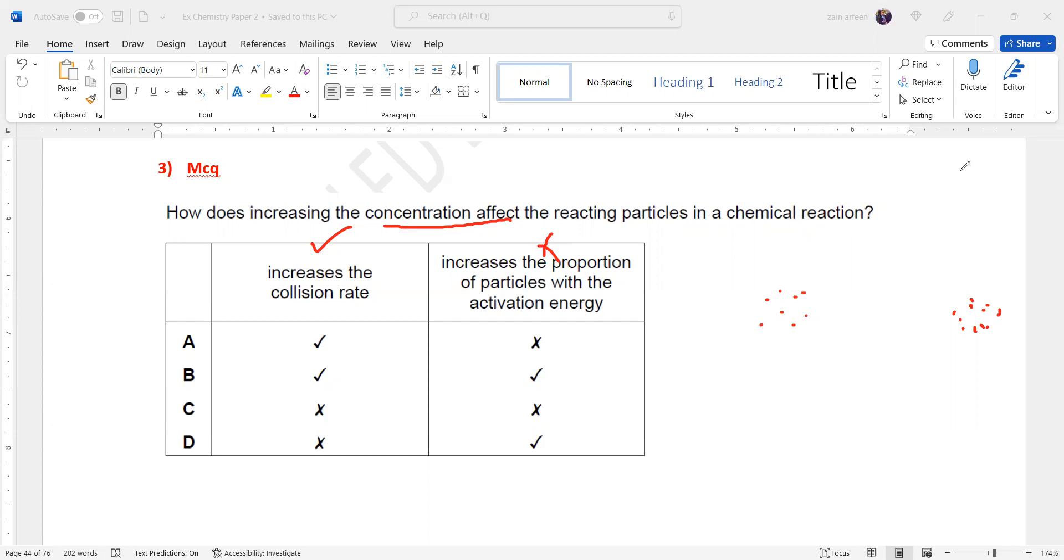So by using a catalyst, we can lower the activation. By increasing the temperature, we increase the energy of the particles, so they have more energy or more than activation. So that's the term concentration.